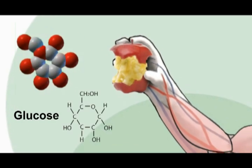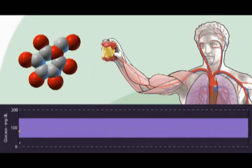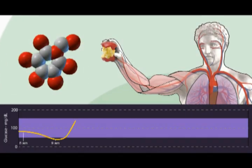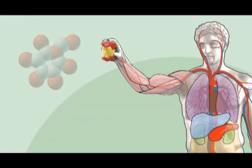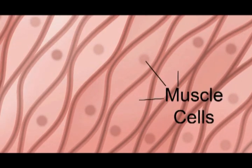As this glucose is absorbed from your digestive system into your bloodstream, your blood sugar levels increase. Your circulatory system then carries the glucose to muscle cells throughout your body, where it is used to generate energy.